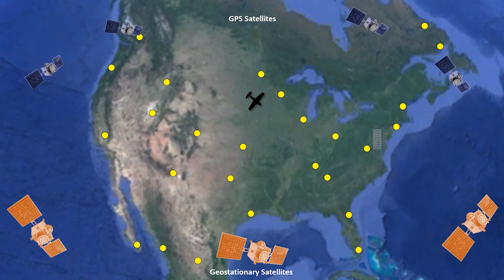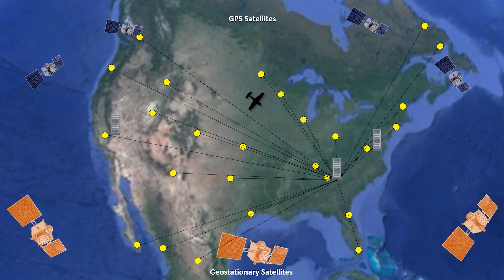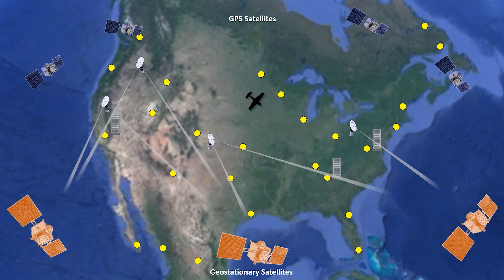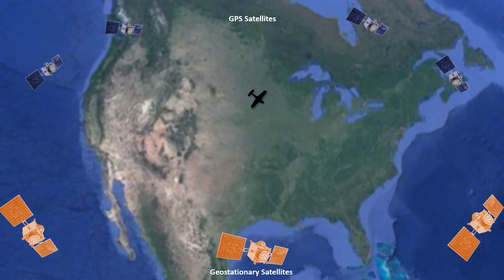That information and other position errors are transmitted by all stations via terrestrial link to master stations — there are three. The master station is a computer system that collects all the error messages and generates a user message. The user message is instructions for GPS receivers like the one on our aircraft on how to handle the errors detected by the system. This message is uplinked to the geostationary satellites in the southern sky above the equator, and this happens every second.